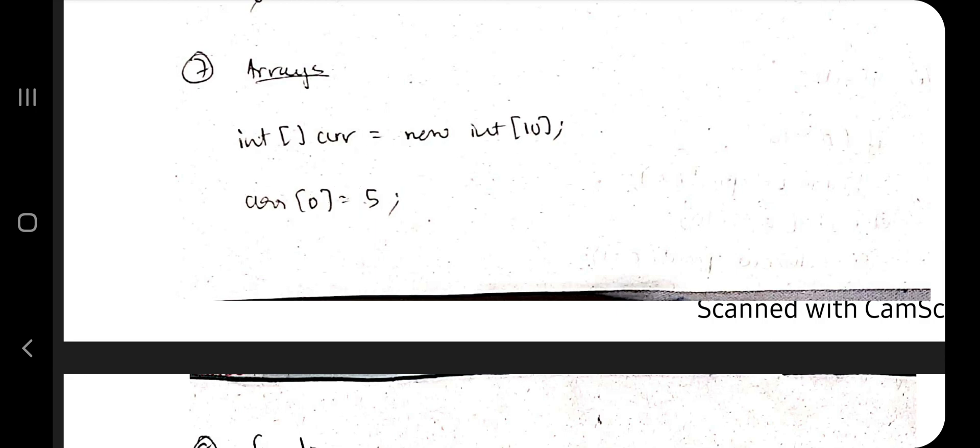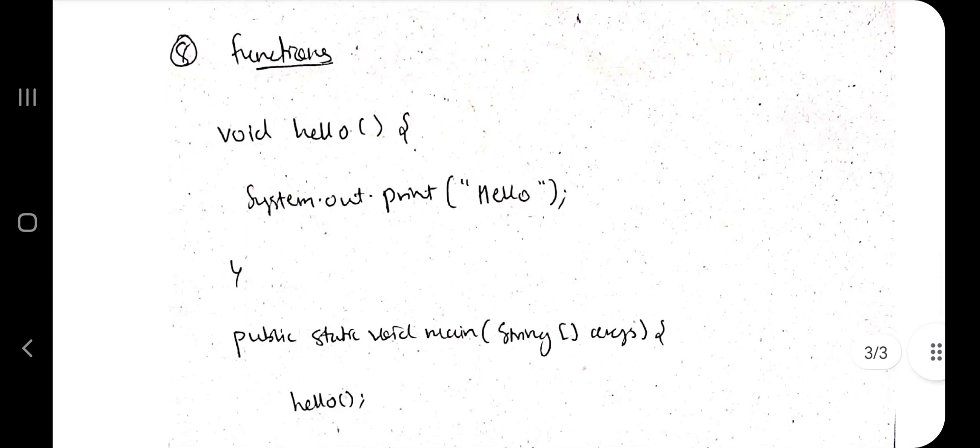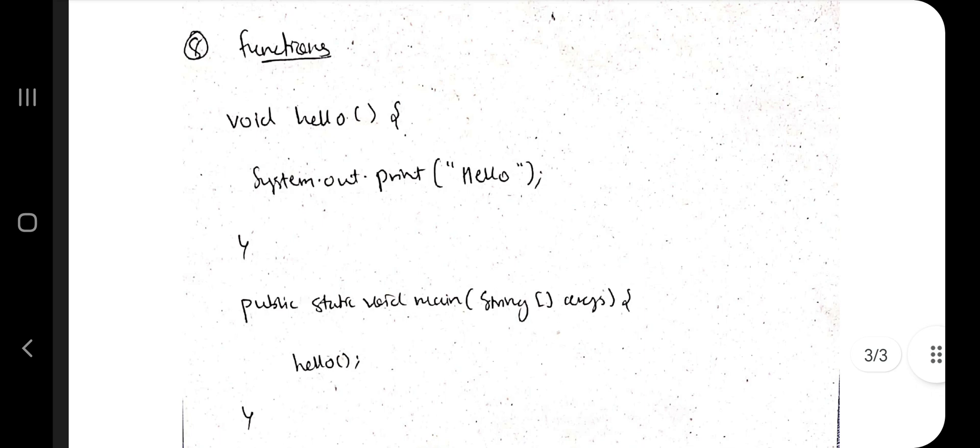Coming to the last one - just functions. You need to know functions. This is the main function, this will execute first, and whatever you call here this is known as function call. So if you make a function call like here I have written 'hello' - and function call is always ending with brackets - so what happens? This definition is called. Definition is present here.